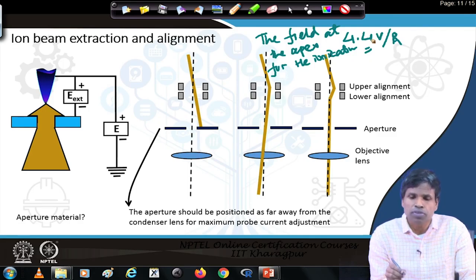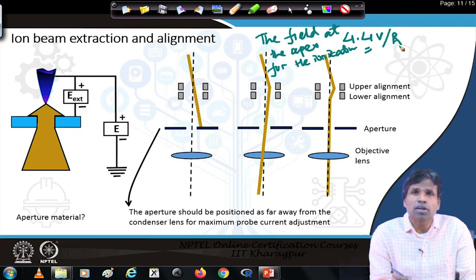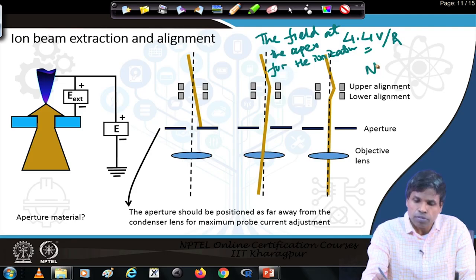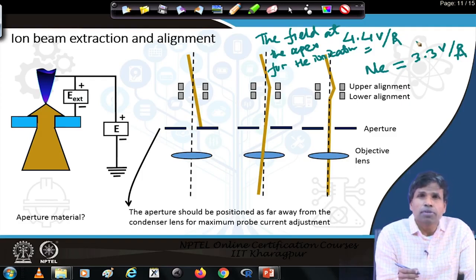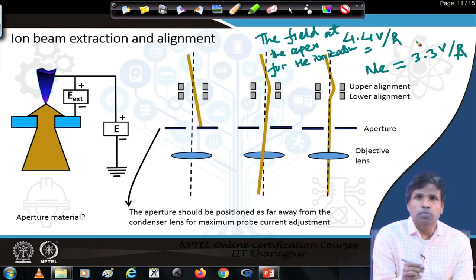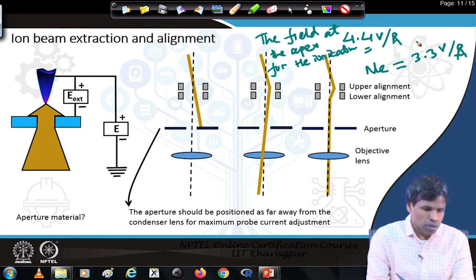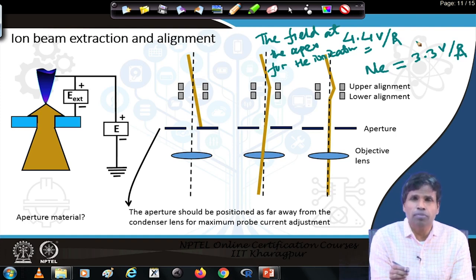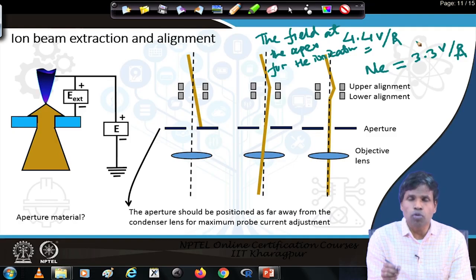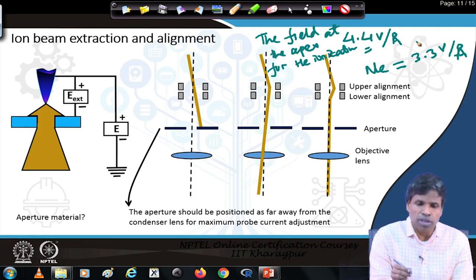Once a trimer is formed, the field at the trimer surface should be at 4.4 volts per angstrom to efficiently ionize the helium atoms. For neon, the field is supposed to be 3.3 volts per angstrom. When this potential is maintained at the tip, ions can be efficiently extracted from the apex and brought downwards. The extraction voltage is also used to ensure there are no stray individual atoms sitting around the tip — a slightly higher voltage will evaporate those, forming a very well-defined trimer. Microscopy work begins only once the trimer is confirmed inside the microscope.